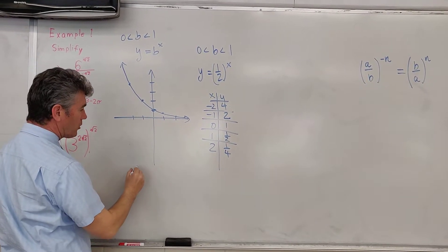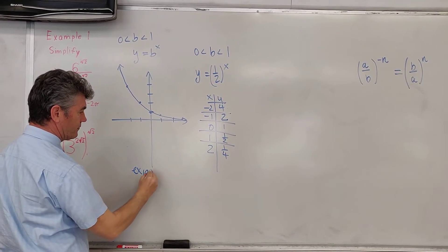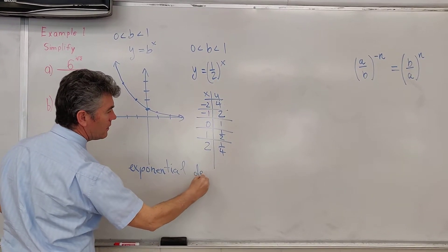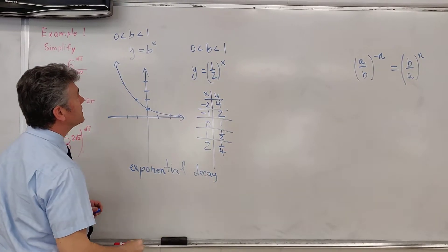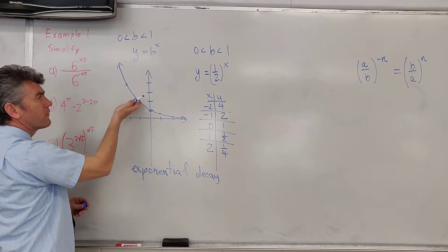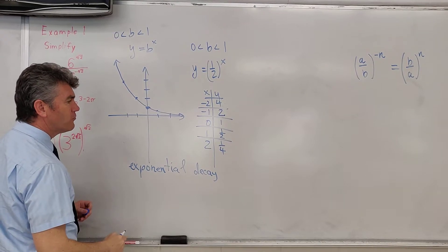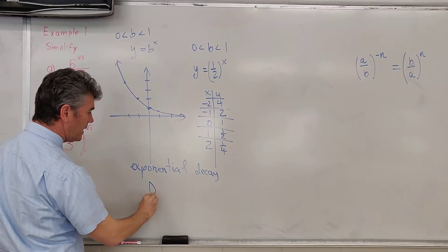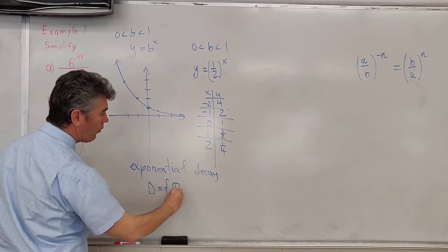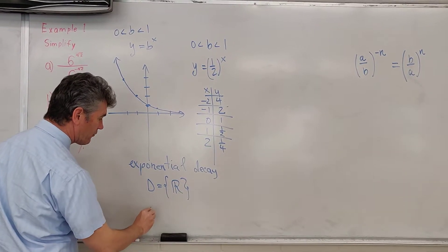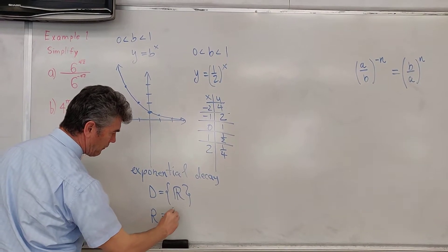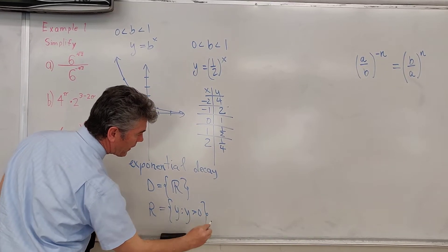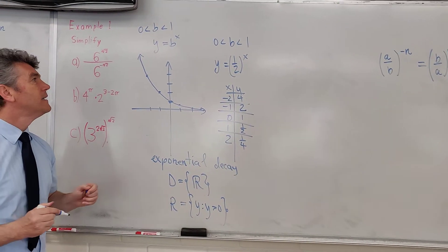It models exponential decay. If b is between zero and one, the graph decreases from left to right. It models exponential decay. The domain consists of all real numbers, and the range consists of all positive real numbers, greater than zero.